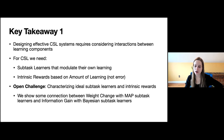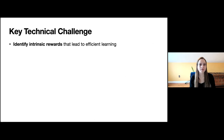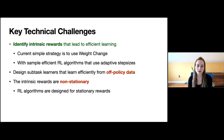Coming back to the RL setting: one key technical challenge was identifying good intrinsic rewards for efficient learning — we'll use weight change going forward, keeping in mind the lesson of using sample-efficient RL algorithms that carefully adapt step sizes and are robust to noise. Two remaining challenges are efficient subtask learners and the behavior policy. The intrinsic rewards are inherently non-stationary because they're tied to the internal learning progress of the agent: once your subtask learners learn from a transition, the next intrinsic reward for that same transition will be different.